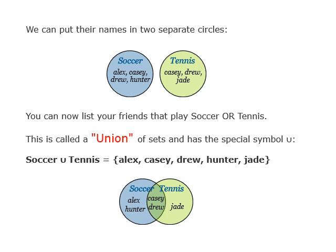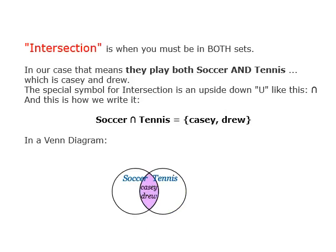In a Venn diagram, the rectangle represents the universal set. The intersection is when an element must be in both sets — meaning friends who play both soccer and tennis, which is Cassie and Drew. The symbol for intersection looks like an upside-down U. Soccer ∩ Tennis = {Cassie, Drew}.